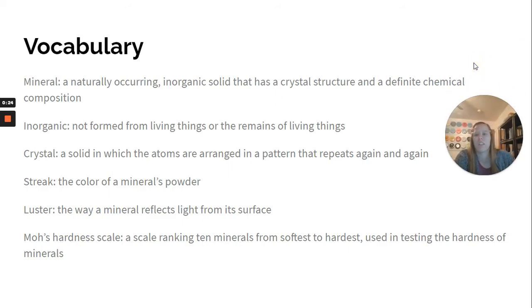So our vocab for chapter 6, a mineral: a naturally occurring inorganic solid that has a crystal structure and a definite chemical composition. Inorganic: not formed from living things or the remains of living things.